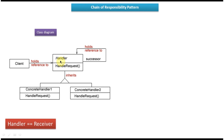Here you can see Handler, which is an interface or abstract class, and it has a handle request method which is abstract. Here you can see ConcreteHandler1 and ConcreteHandler2, which inherit the Handler interface or abstract class. This handle request method will be implemented by these concrete handlers, as you can see here.